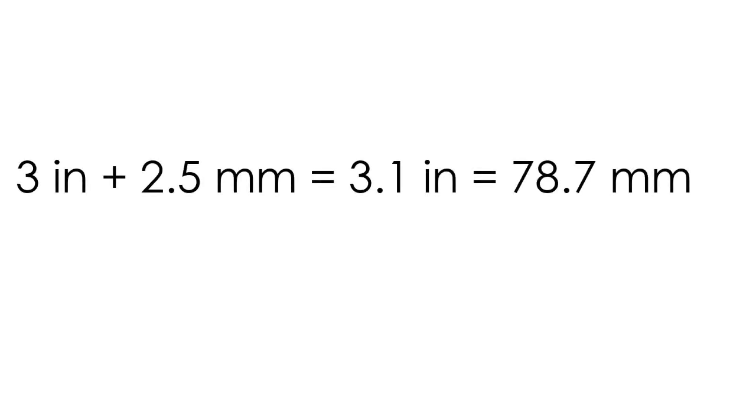Units of the same type may be mixed. For instance, 3 inches plus 2.5 millimeters is a valid expression, as both units represent length. 3 inches plus 2 degrees would not be valid, as the units represent both length and angle.